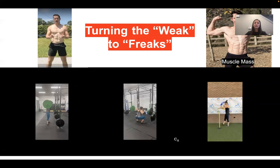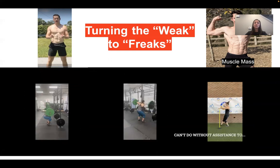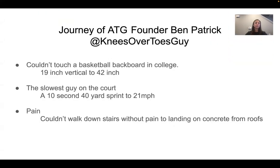Ben Patrick has used the ATG system for over 10 years. He's increased his vertical from 19 to 42 inches, gone from a 10-second 40 — or even slower, as he says — to sprinting over 21 miles per hour. Walking downstairs was extremely painful, and now he's able to jump off of one-story roofs onto concrete — not advised — with no pain.